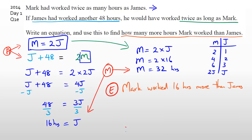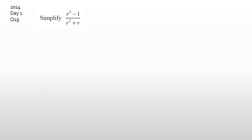Any questions on this particular question? Okay, moving on. This next question — I guarantee someone in this group has done this. They would have seen r² minus 1 over r² plus r, saw the two r squareds, and went 'oh yeah, I can cancel that' — putting the final answer as negative 1 over r. Has anyone got that answer here? Yes — thank you, there's always one person that will do this.